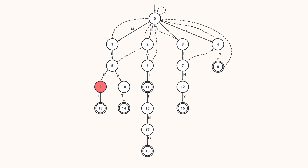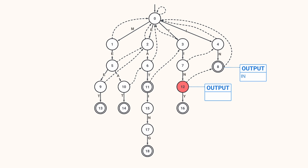For depth-3 nodes: state 9 follows the suffix link of state 5 to state 2, reading 'E' from state 2 requires following the failure link back to 0 then reading 'E' to reach state 2 — so suffix link of state 9 points to state 2. State 10 follows state 5's link to 2, reading 'A' goes to state 6. State 11 follows state 6's link to 0, reading 'T' gives state 3. State 12 follows state 7's link to state 4, reading 'N' gives state 8 — and because state 8's output list is non-empty, we also create an output link from state 12 to state 8.